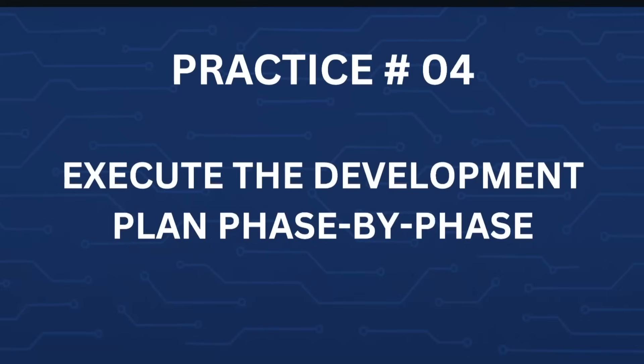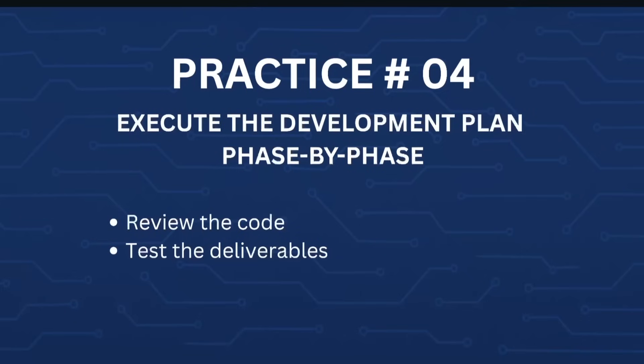Now that you have a well-structured application development plan, the next must-do is to execute this plan phase by phase. It's very important to review the code at every phase and test the deliverables of each phase. Your code review should be as thorough as you would do for a human developer.